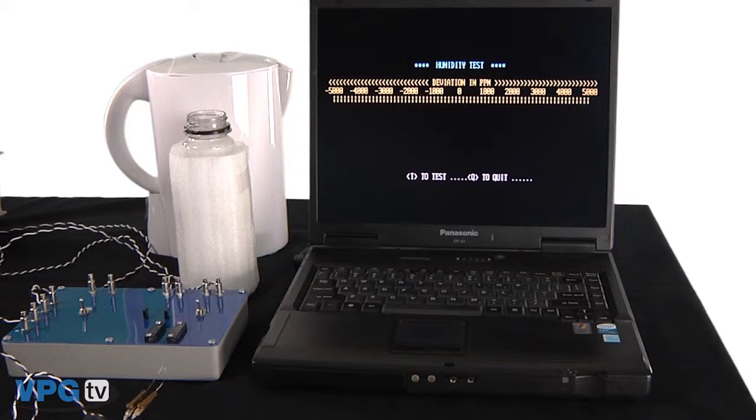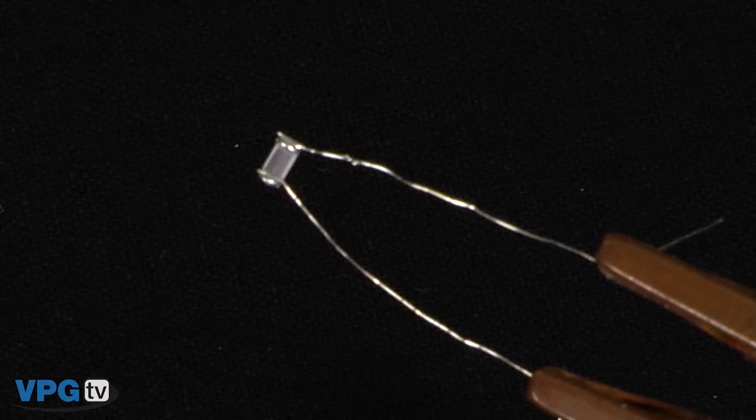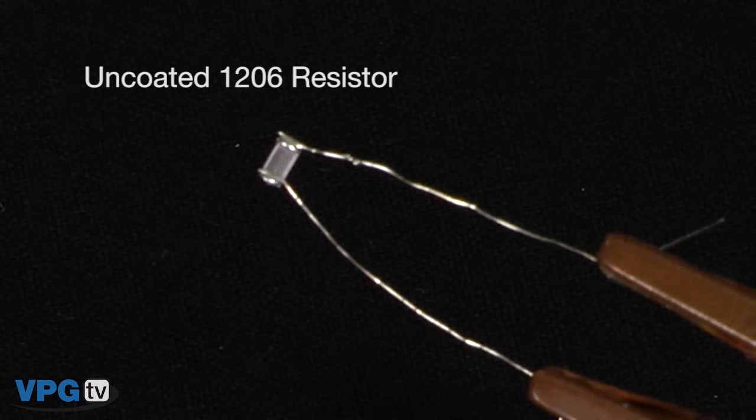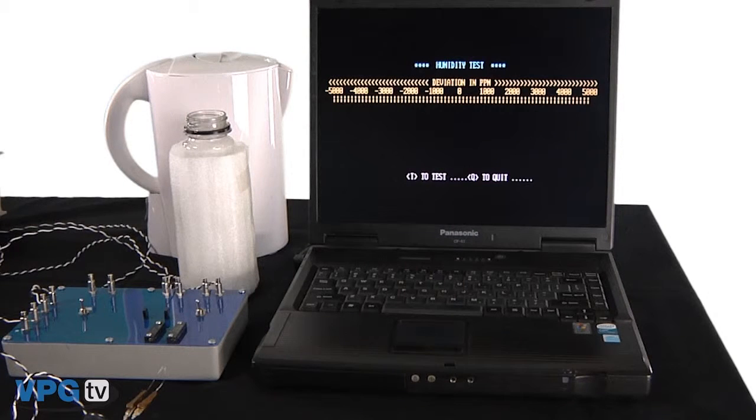Allow me to demonstrate. I have a test setup that will simultaneously power at one milliwatt and monitor an uncoated nichrome 1206 resistor in a high humidity environment. The test setup shows any delta R the resistor may exhibit during the test and parts per million deviation from its initial value along with the actual test duration.